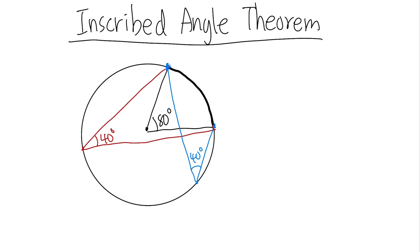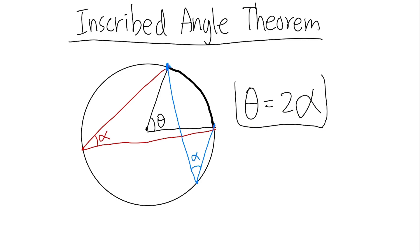In general, if you call the central angle theta and the inscribed angle alpha, then theta equals two times alpha. In other words, the central angle is always going to be twice as big as the inscribed angle formed by this construction. There's also another possibility — what if you happen to pick a point right here and connect the points like this? Same thing applies.